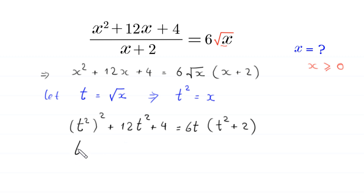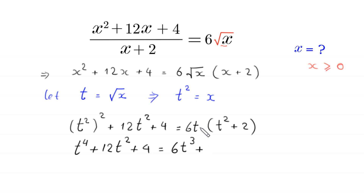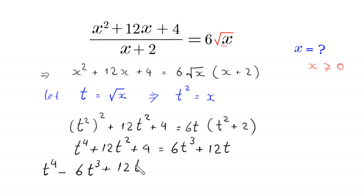This t squared whole squared becomes t to the power 4, so we have t to the power 4 plus 12t squared plus 4 is equal to 6t cubed plus 12t. Moving the right-hand side terms to the left, this becomes t to the power 4 minus 6t cubed plus 12t squared minus 12t plus 4 is equal to 0.